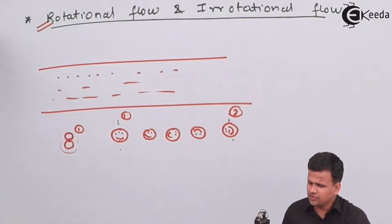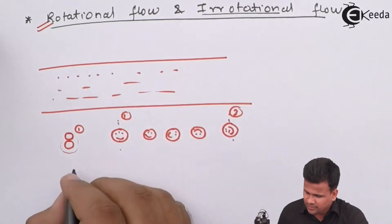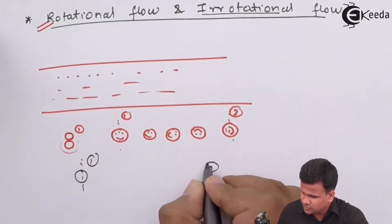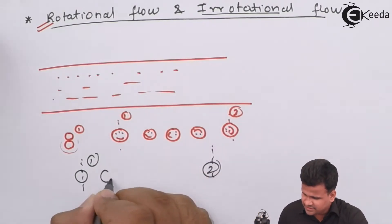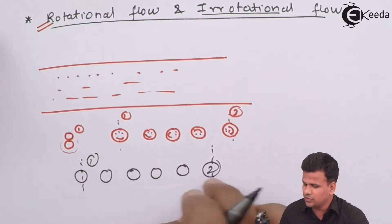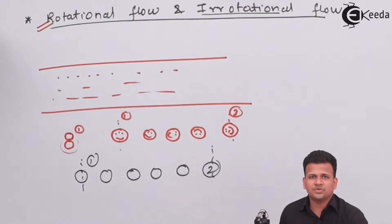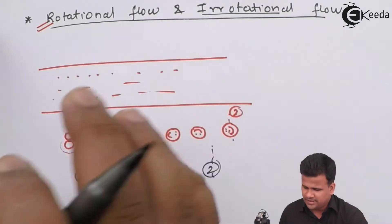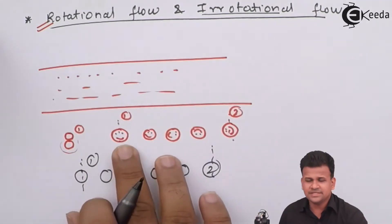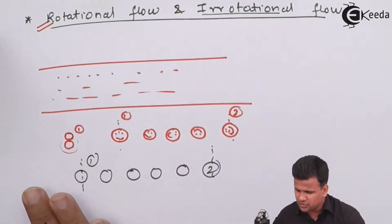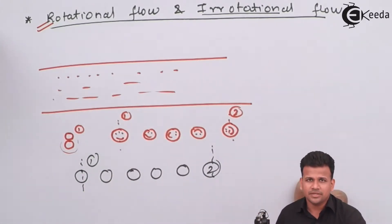For an irrotational flow, the molecule will travel from one part of the fluid to the other part as it is — there won't be any rotation of the fluid. In rotational flow, the molecule rotates over the axis, whereas in irrotational flow the molecule is just traveling in a linear direction.